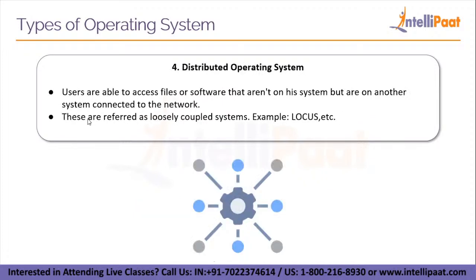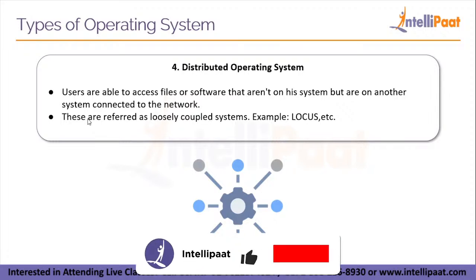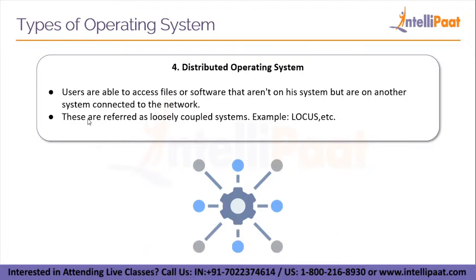The fourth type is distributed operating systems. Here, users are able to access files or software that aren't on their system but are on another system connected to a network. These are referred to as loosely coupled systems. An example is Locus, and most operating systems are also available in distributed versions, including UNIX, Linux, and Windows. When the OS is distributed, it must be installed on multiple servers, which requires special configuration and management processes.